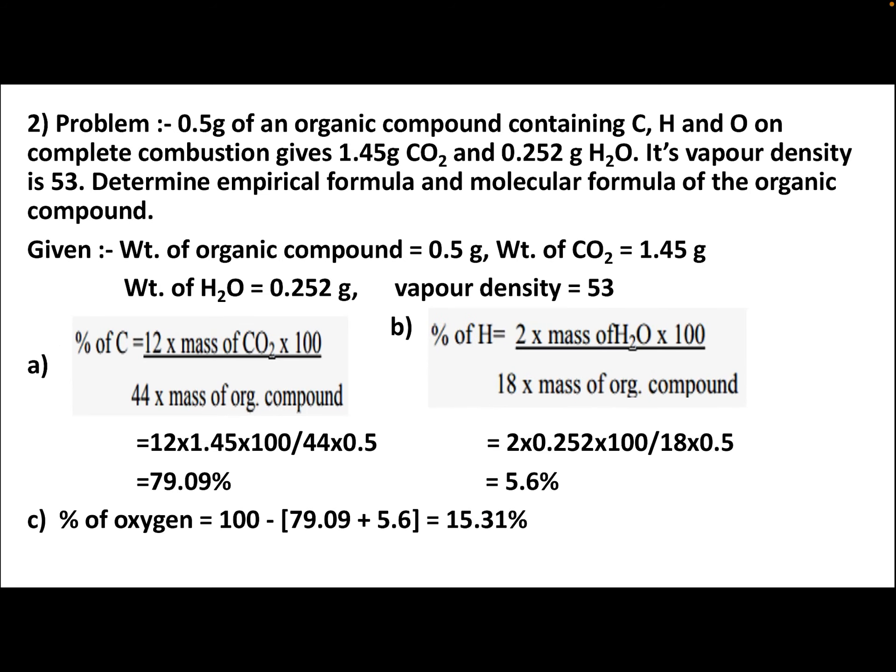Problem: 0.5 grams of an organic compound containing carbon, hydrogen, and oxygen on complete combustion gives 1.45 grams of CO₂ and 0.252 grams of H₂O. Its vapor density is 53. Determine the empirical formula and molecular formula. Applying the formula: % C = 79.09%, % H = 5.6%, and % O = 100 − (79.09 + 5.6) = 15.31%.